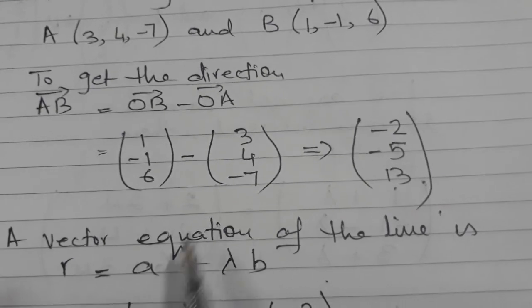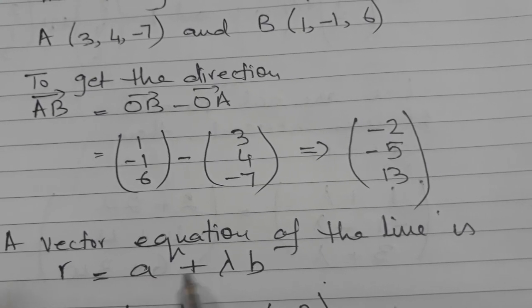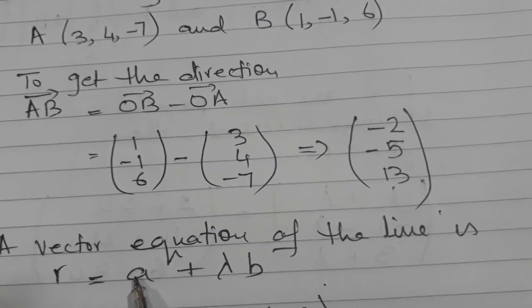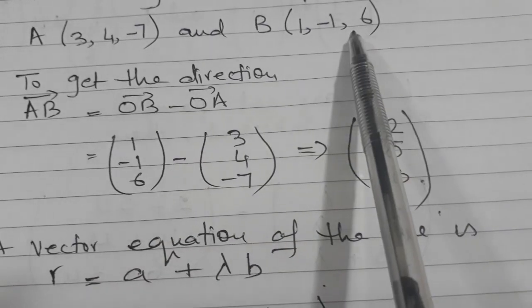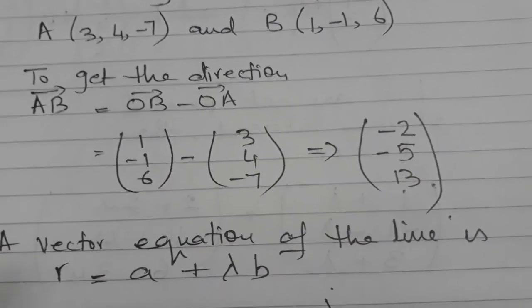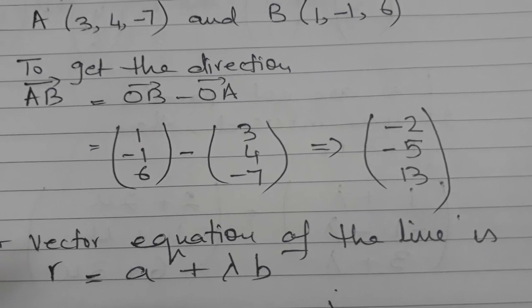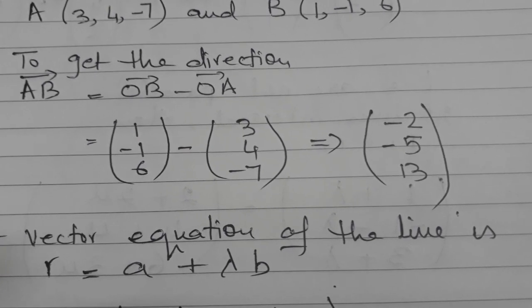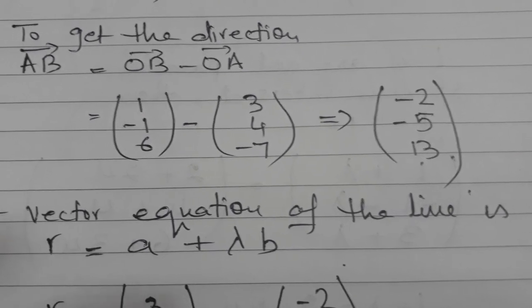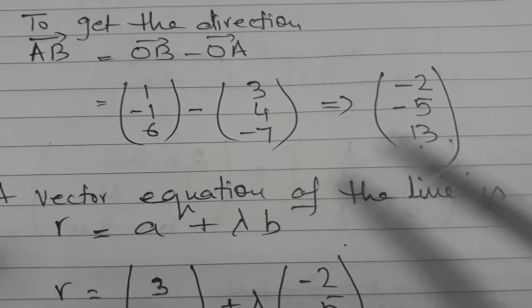So now, in the vector equation of the line, r equals to a plus lambda b. In place of a, you can use any point you like. And that's why it is called that vector equation of the line is not unique. Though it represents the same line, but at a glance it looks different.